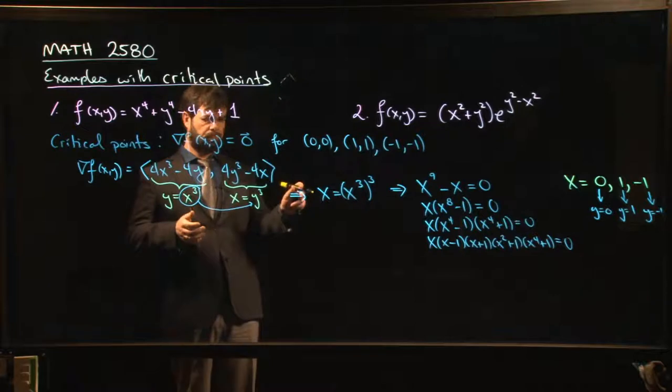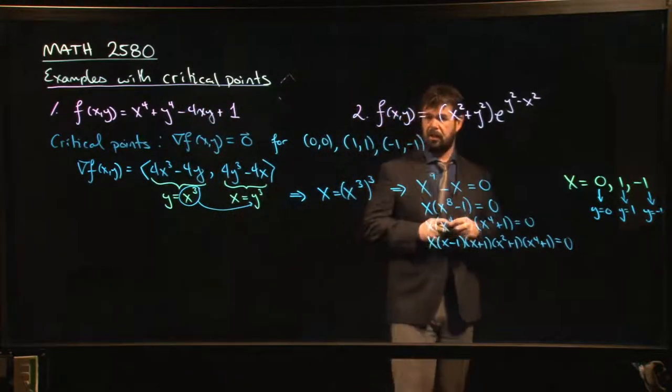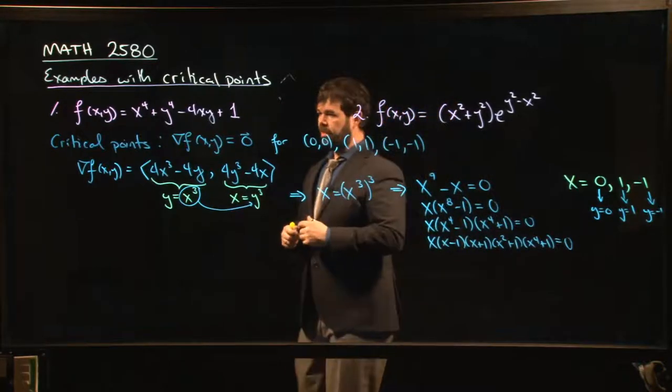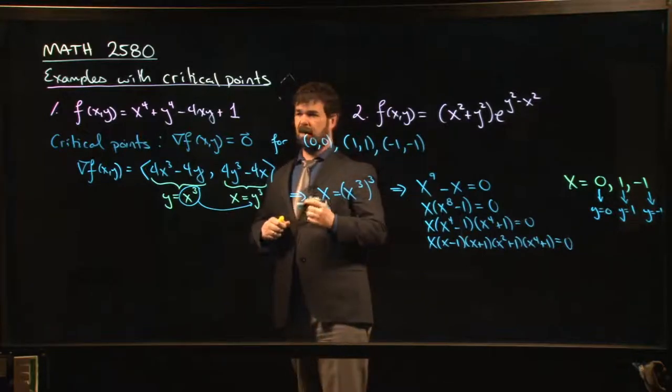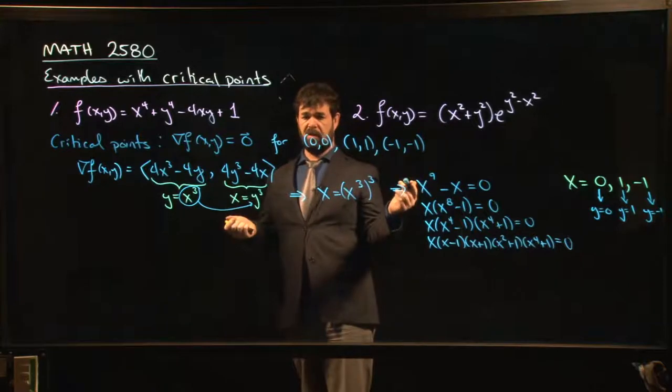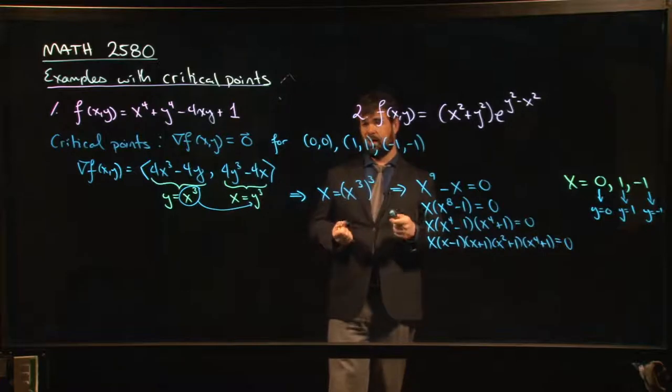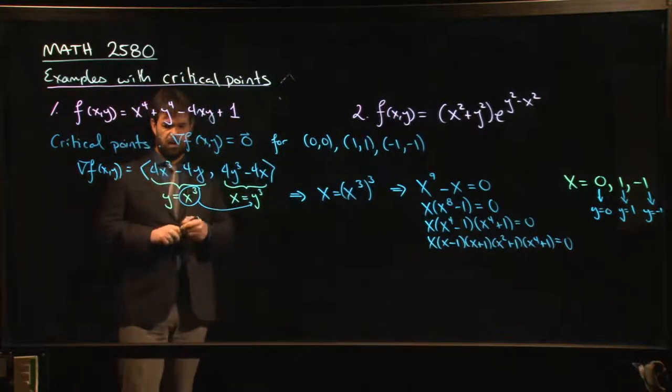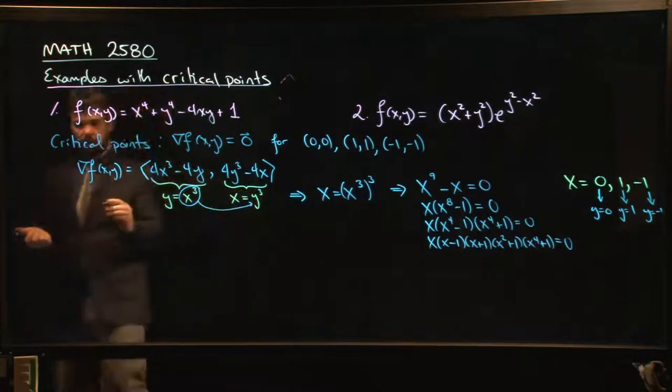We could go about finding critical values, but students will sometimes make this mistake of assuming that if you take these critical points and plug them into your function, if you get a value that's bigger than what you get at other points, that must be a maximum. But this isn't necessarily guaranteed. The only way to be sure that you've got, let's say, a local maximum rather than a saddle point or local minimum is to move to the second derivative test.